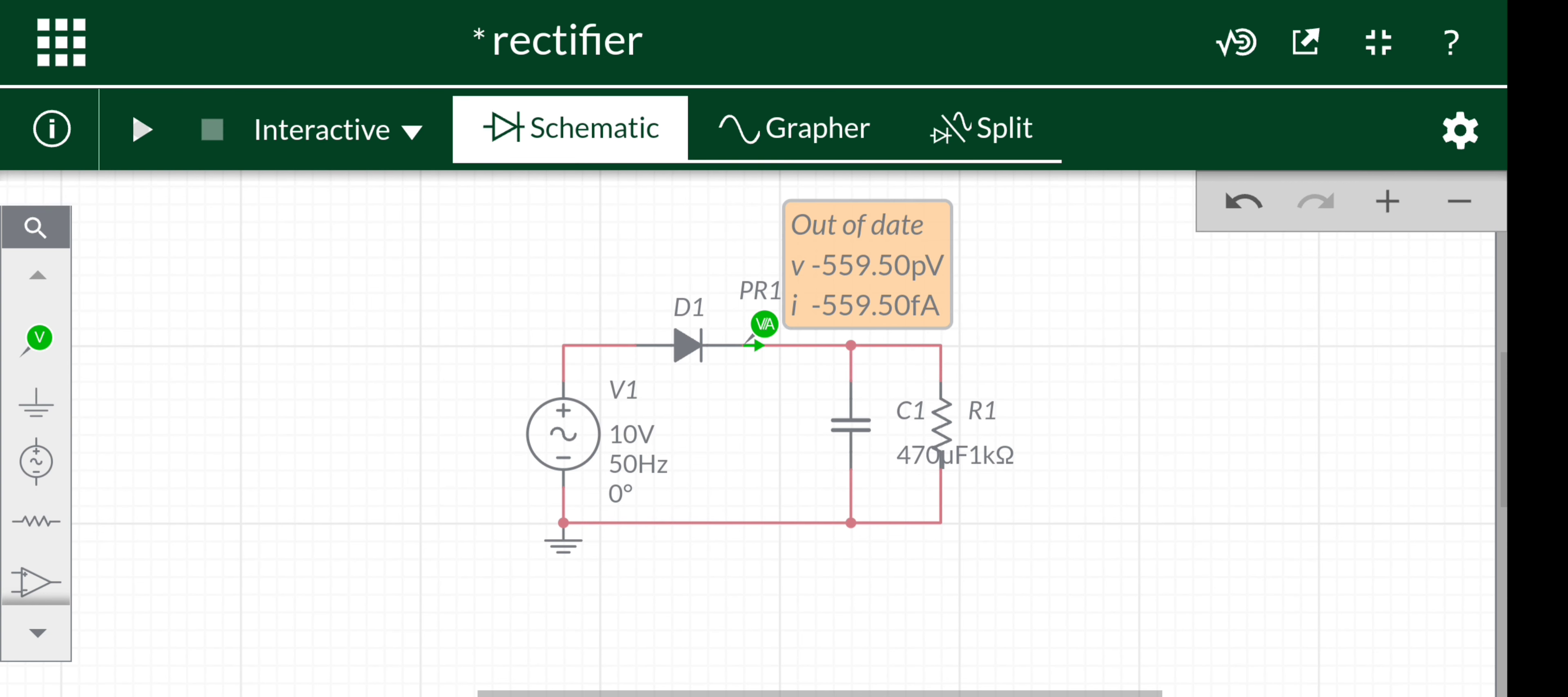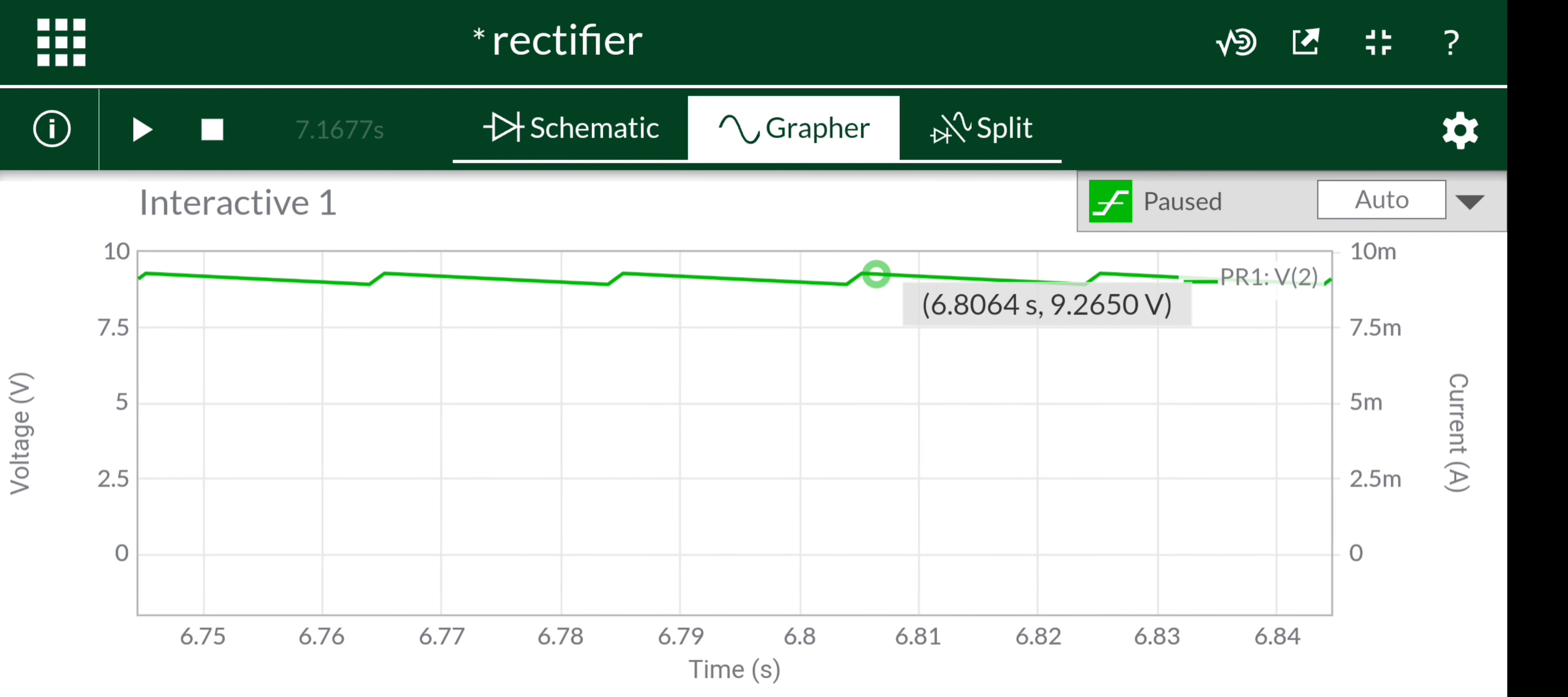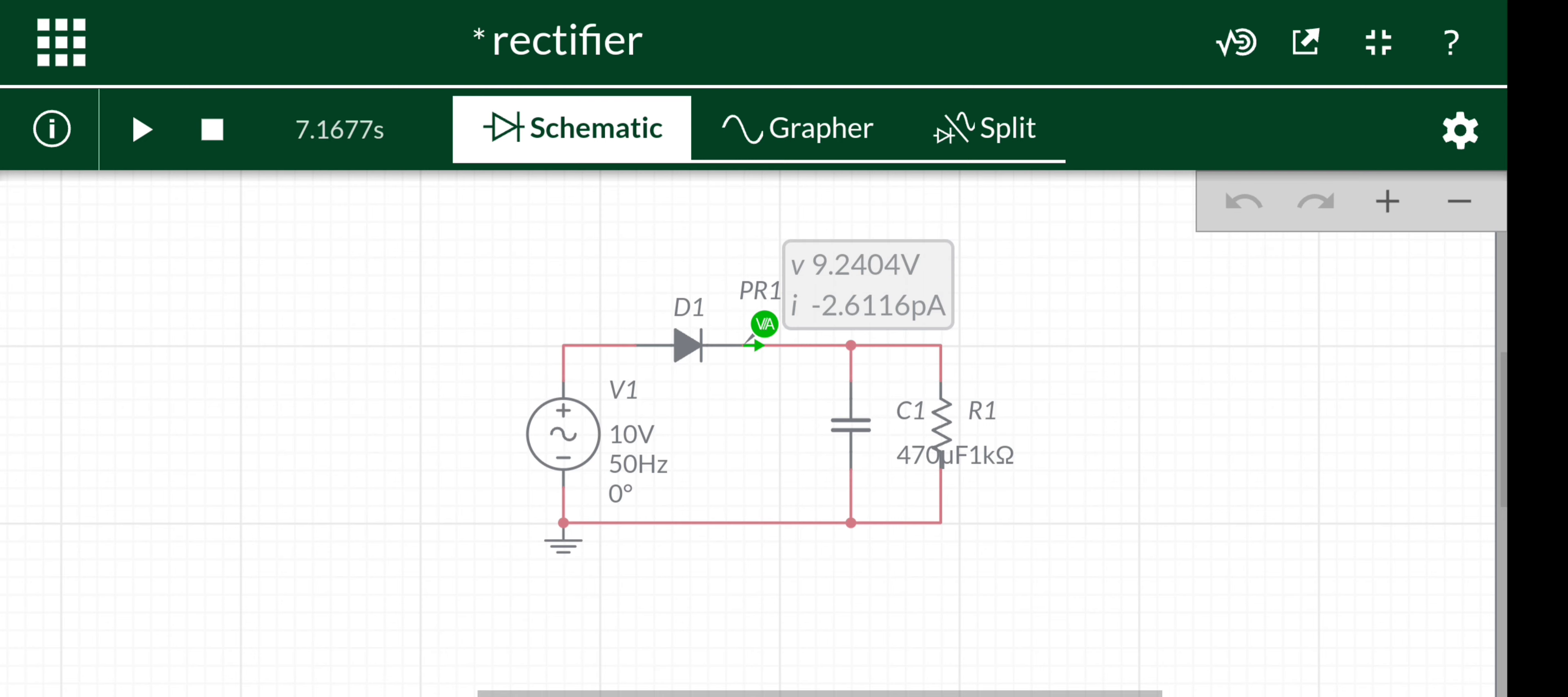Let's simulate the circuit and see the output. Now you can see the pulses at the output. This is the output voltage and it has pulses. If we increase the capacitance value, the pulses will be removed.